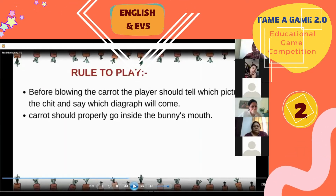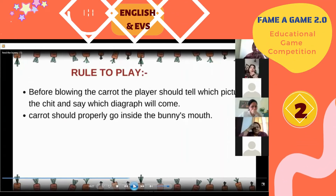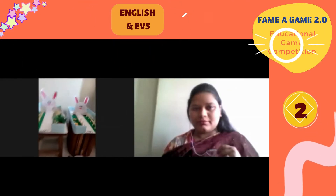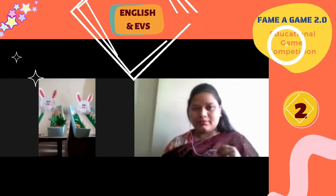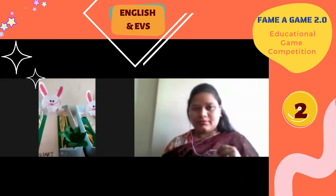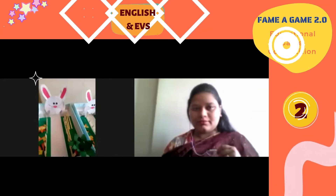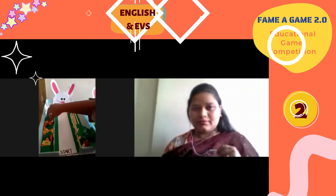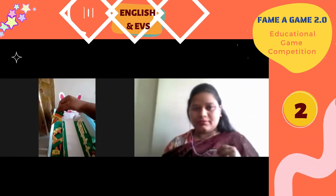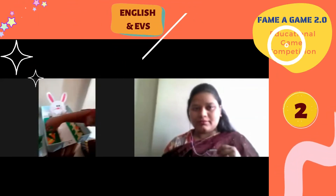Shall I show you the model and start with that? Yes, please. Now this is our model — these are the two models on which we are going to play the game with the children. Here you can all see we have kept the digraphs written on carrots, with different digraphs across the two models.